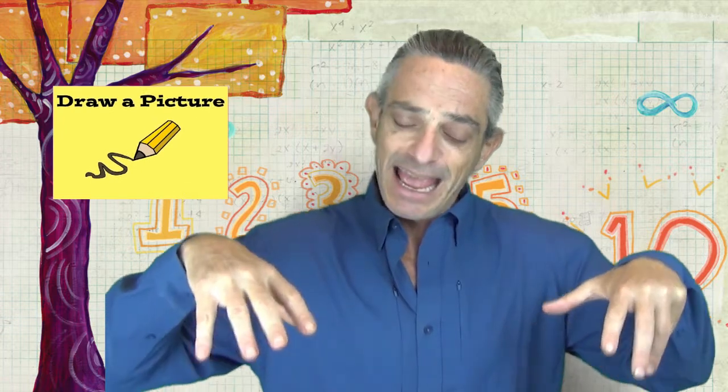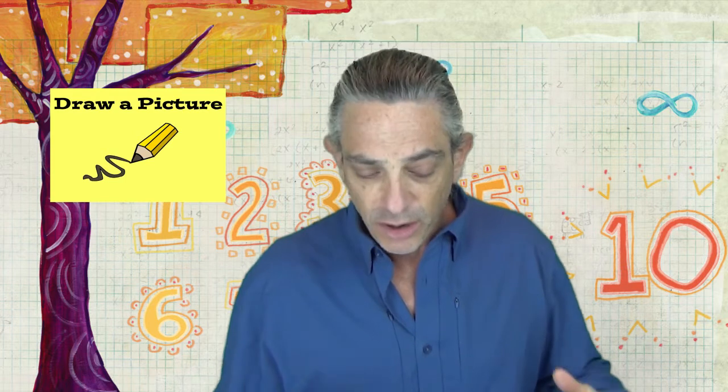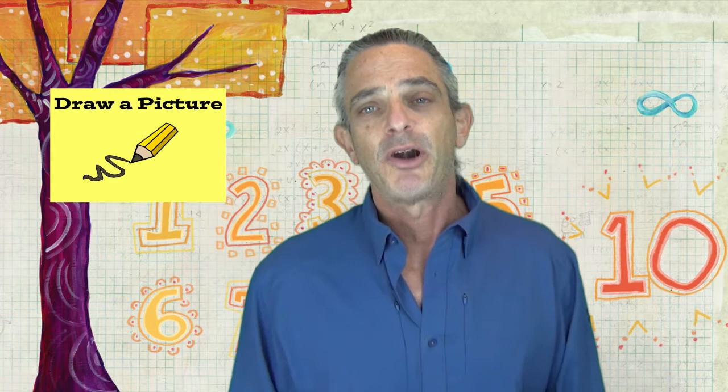In this strategy we make a pictorial representation — a picture of what our problem is telling us — and then we use that picture to solve the problem.